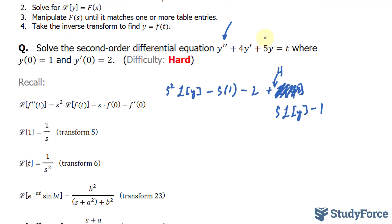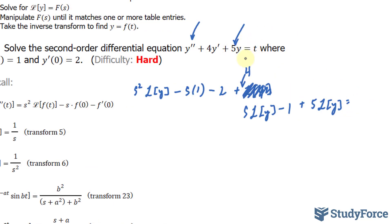Now onto this one. We have plus 5 times the Laplace transform of y is equal to the Laplace transform of t, and for that I can just use 1 over s^2. Let's clean this up a little bit. We have s^2 times the Laplace transform of y minus s minus 2 plus 4 times these two. So 4 times s Laplace transform of y minus 4 plus 5 times the transform of y is equal to 1 over s^2.